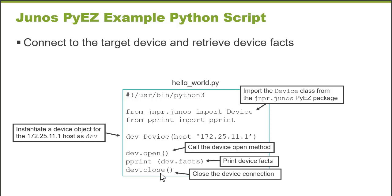Junos PyEZ by default connects to the target device using Secure Shell with NETCONF — it's a NETCONF over SSH connection. It can also connect using a console connection or Telnet, but NETCONF over SSH is the default. When connecting to a Junos device, you must authenticate before issuing commands. In this example, I'm using SSH keys, so I won't be prompted for a username and password — that's what automation is all about. Now let's connect to a device, look at the script, and run it to see the output.